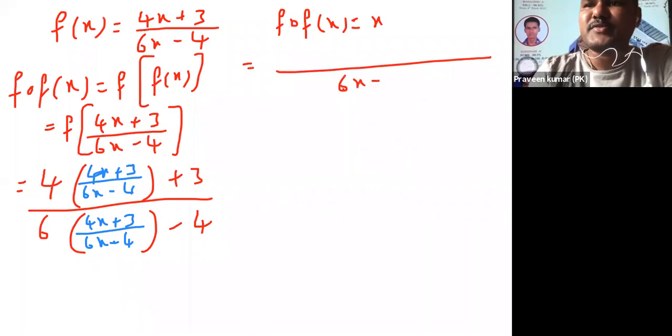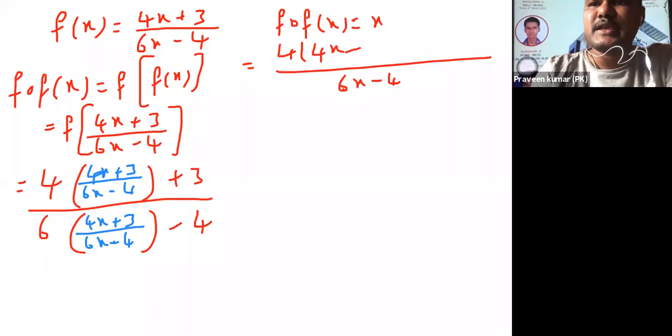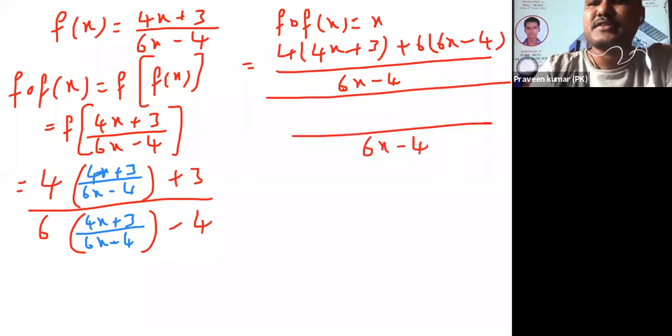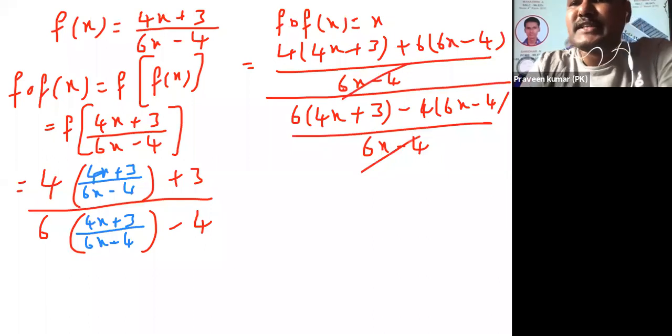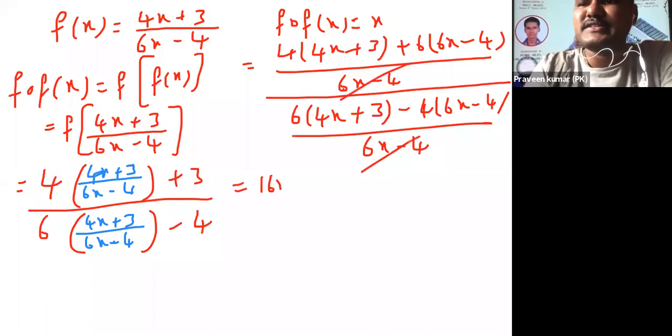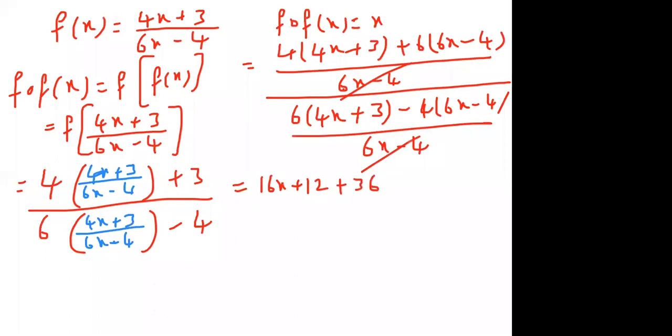6x minus 4 LCM in numerator: 4 into (4x plus 3) plus 6 into (6x minus 4) divided by denominator also 6x minus 4 LCM: 6 into (4x plus 3) minus 4 into (6x minus 4). Both terms get cancelled. So we will multiply 4... we will multiply 4: 4 are 16x plus 4×3, that's why the numerator is plus 3.